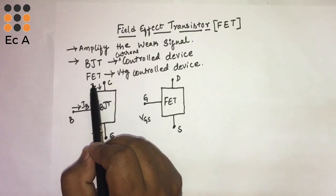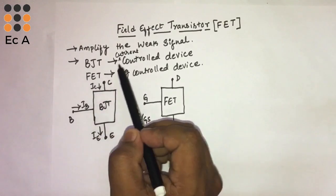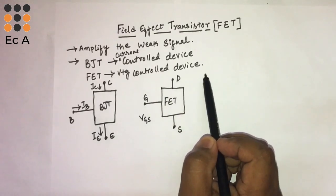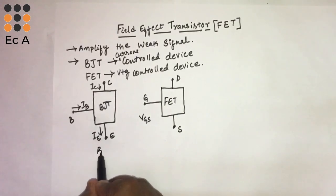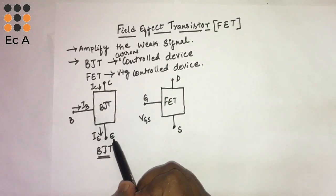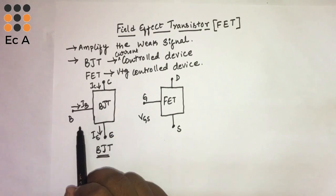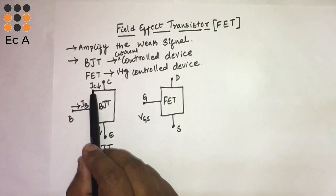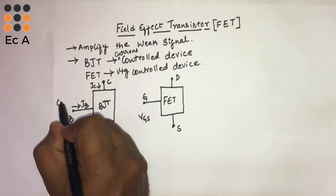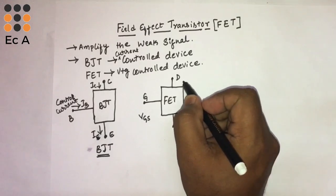BJT is bipolar junction transistor and FET is field effect transistor. The first major difference is BJT is a current control device and FET is a voltage control device. In BJT, there are three terminals: emitter, base, and collector. The base current is used to control collector current as well as emitter current, that is why we call this the control current.